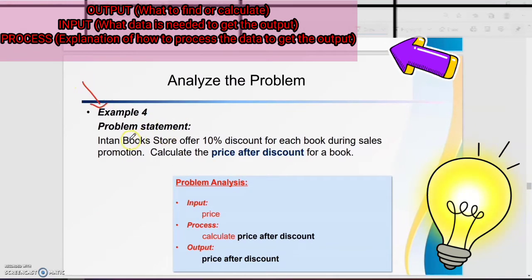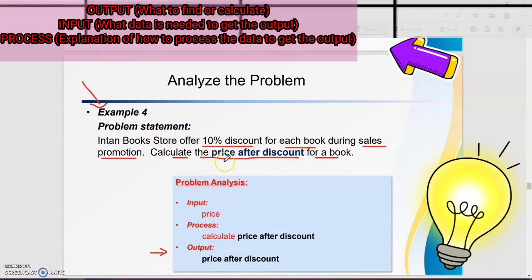Example four problem statement: an intern bookstore offers a 10% discount for each book during sales promotion. Calculate the price after discount. Make sure when you get the problem statement, the first step is to read carefully to identify and do the problem analysis. Trace out the output — based on this problem statement, the output should be price after discount. To get the price after discount, the input is price, and the process is: calculate price after discount.